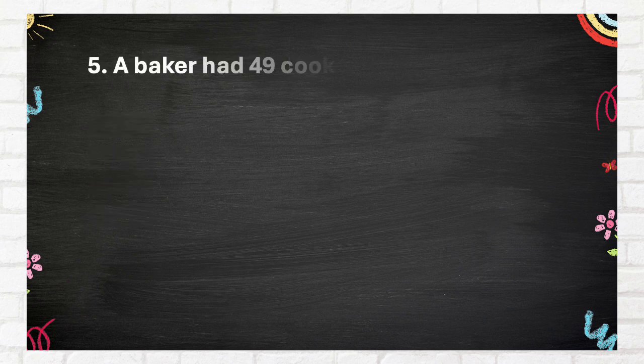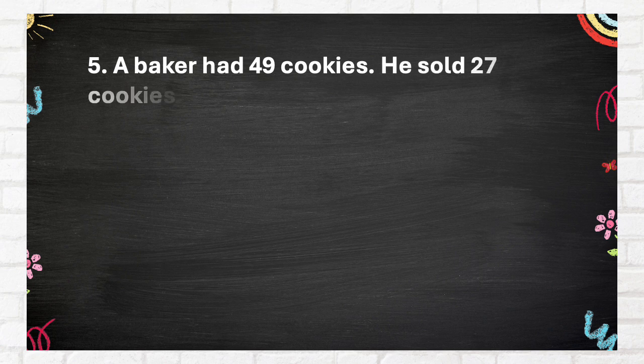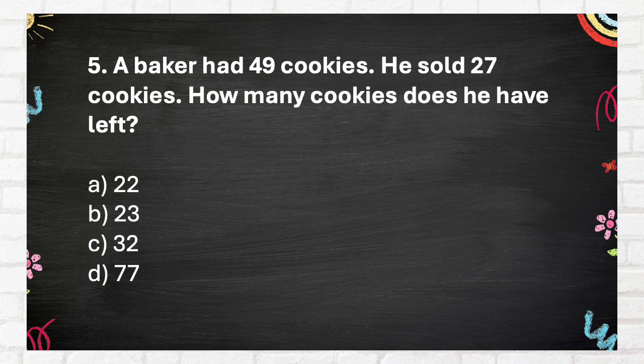Question number 5. A baker had 49 cookies. He sold 27 cookies. How many cookies does he have left? Again, a baker had 49 cookies. He sold 27 cookies. How many cookies does he have left? A. 22. B. 23. C. 32. D. 77.